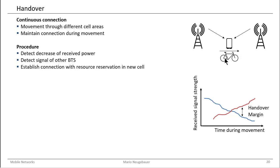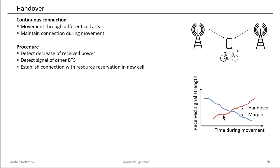How does the procedure look like? While you move with your bike from one cell to the other, you would measure the received signal strength. This is a measurement of the power you receive, and you see that for the first cell you were coming from, the received signal strength decreases as you go farther away from that antenna. On the other hand, the power received from the second antenna increases because you are coming closer to it.